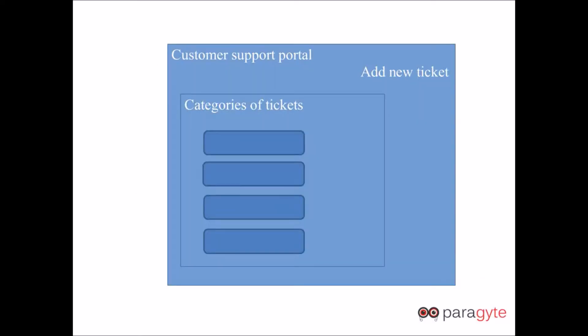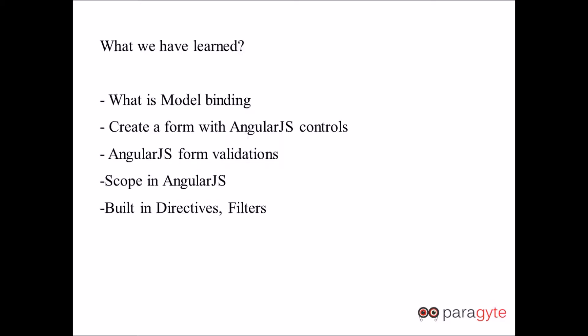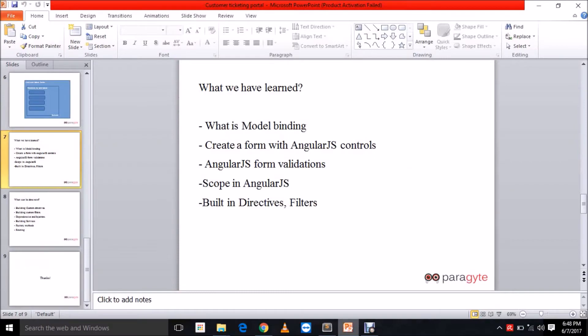The basic layout of the application is as follows: we have a button which will help us add a new ticket. We have categories of tickets displaying the different tickets added to the system. When you click on the 'Add New Ticket' button, a form will be displayed to the user with various controls, and there will be a button to submit your ticket.